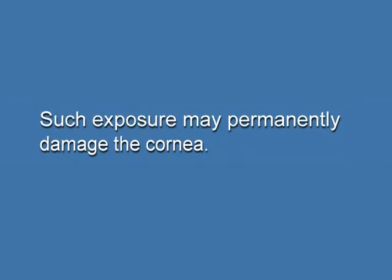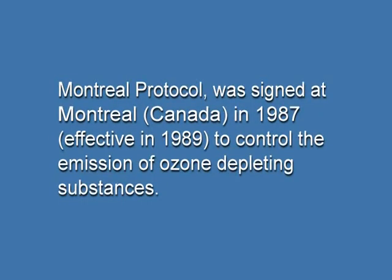In the human eye, the cornea absorbs UV-B radiations, and a high dose of UV-B causes inflammation of the cornea known as snow blindness or cataract. These exposures may permanently damage the cornea. Knowing these harmful effects of ozone depletion, an international treaty known as the Montreal Protocol was signed in Montreal, Canada in 1987. It became effective in 1989 and was formed to control the emission of ozone-depleting substances.